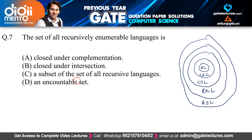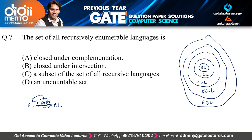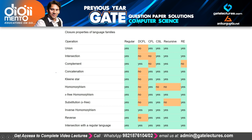Closure property means: if we take a language from a family and perform some operation on it, and the result is also in that same family, then that family is closed under that operation. This applies to every family of languages.